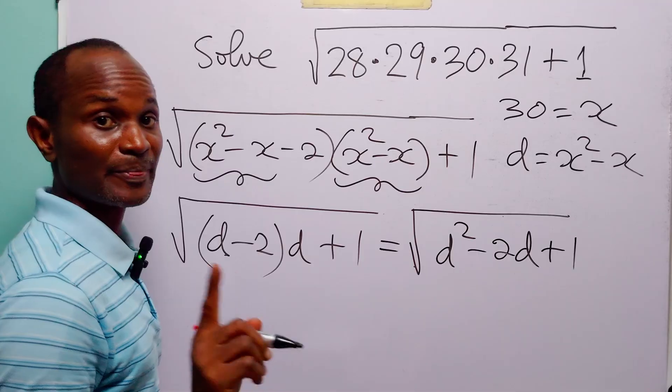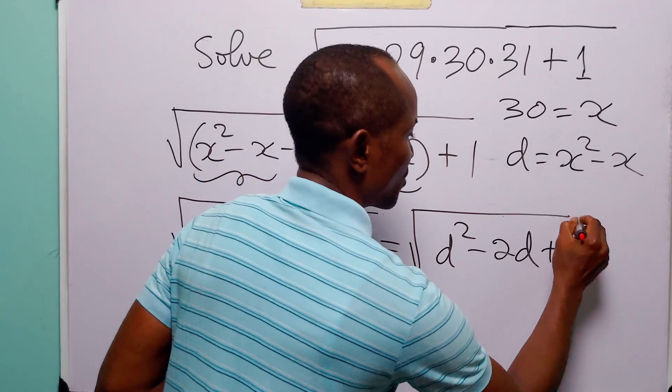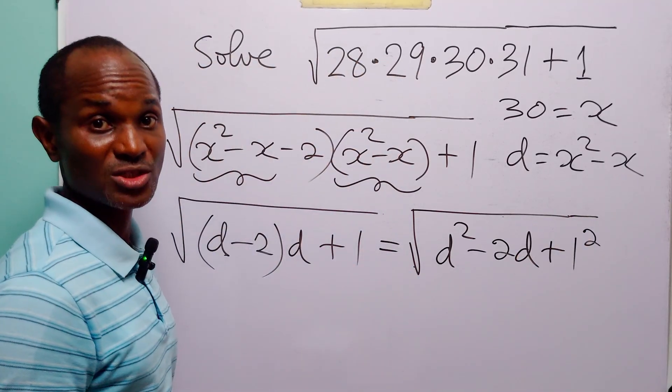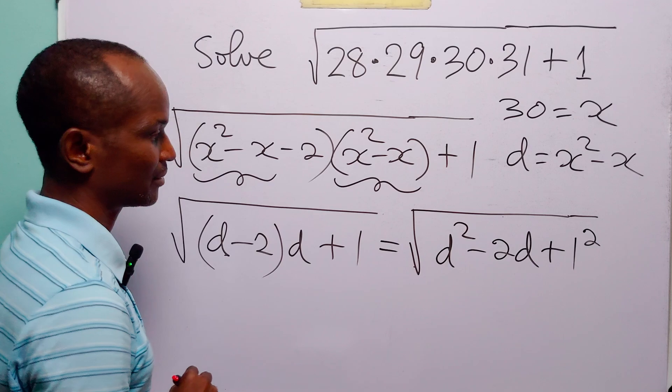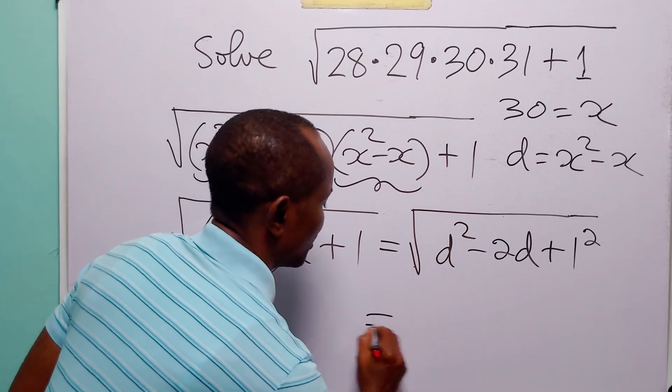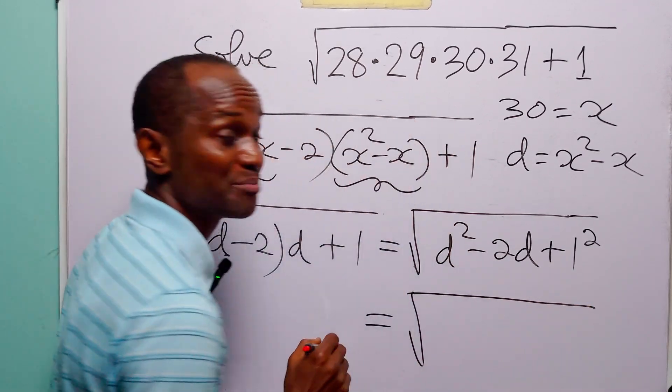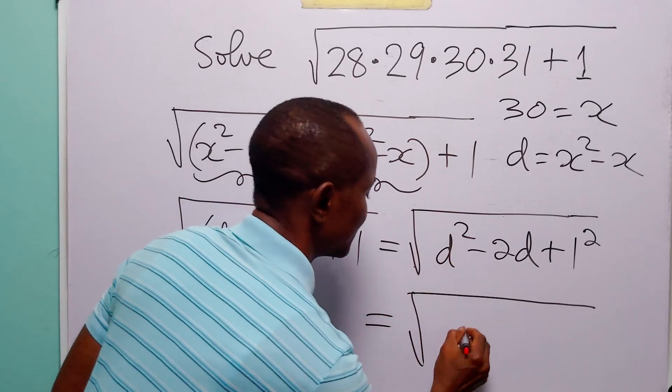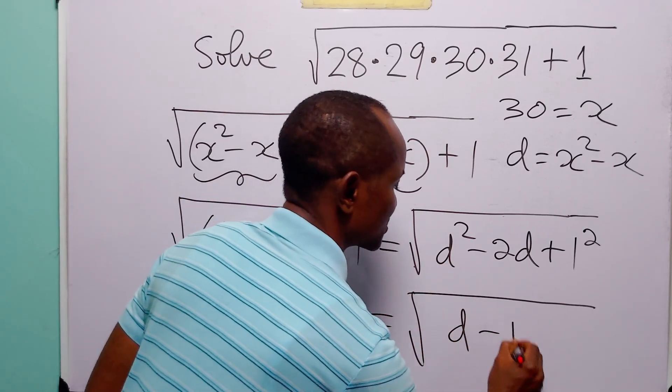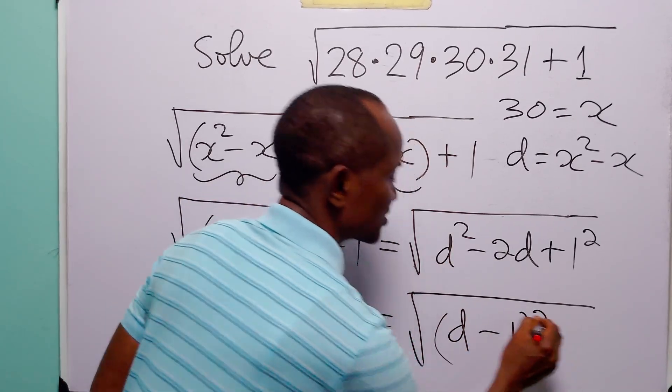Now look at this. Let us write this as 1 squared. Of course you know that 1 squared is equal to 1.